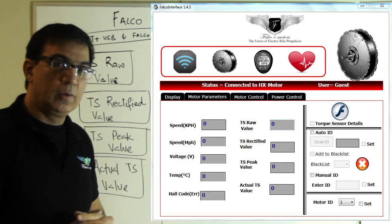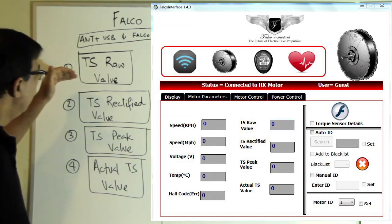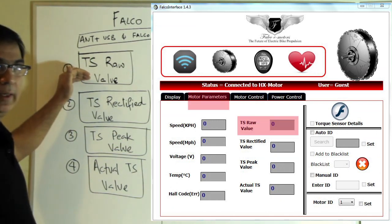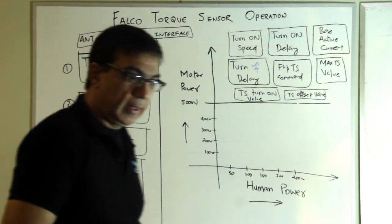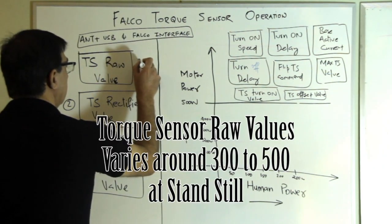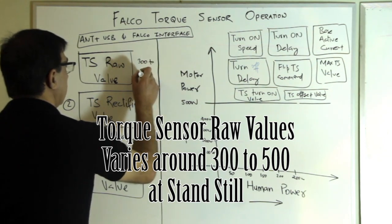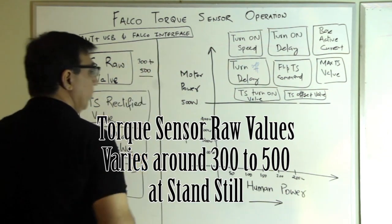The first thing you want to do is look at the TS raw value. The TS raw value will vary 300 to 500 when you are standing still.